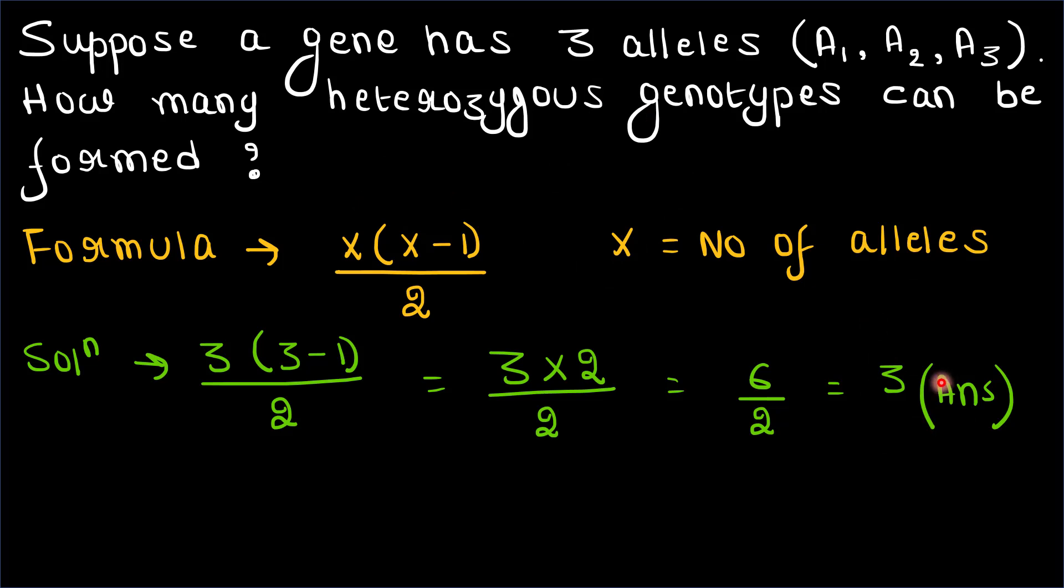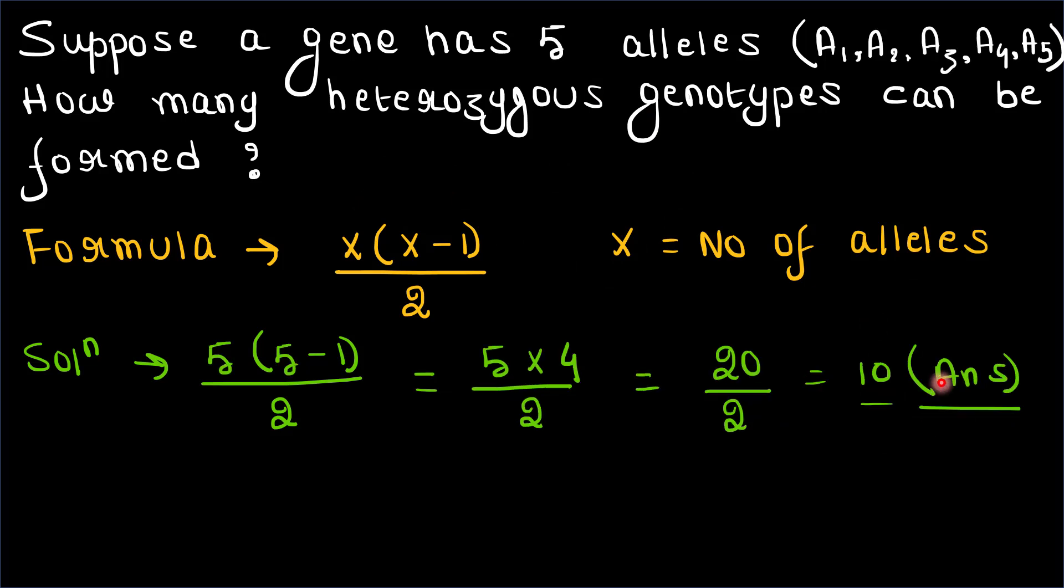Next question: here we have five alleles for a particular gene, A₁ through A₅. How many heterozygous genotypes can be formed? Again, we will use this formula where x equals five. Put this five in x, and here is the answer.